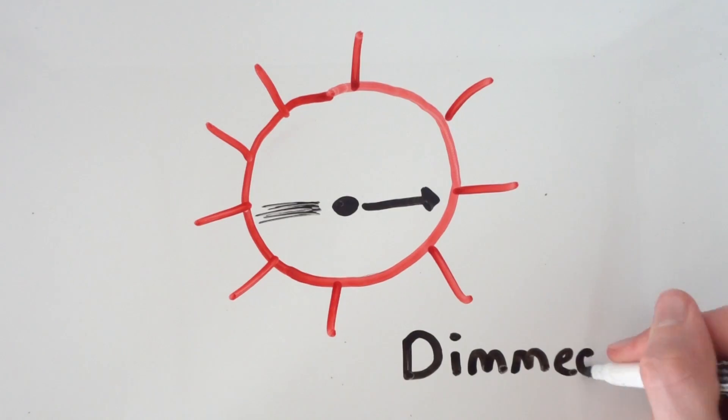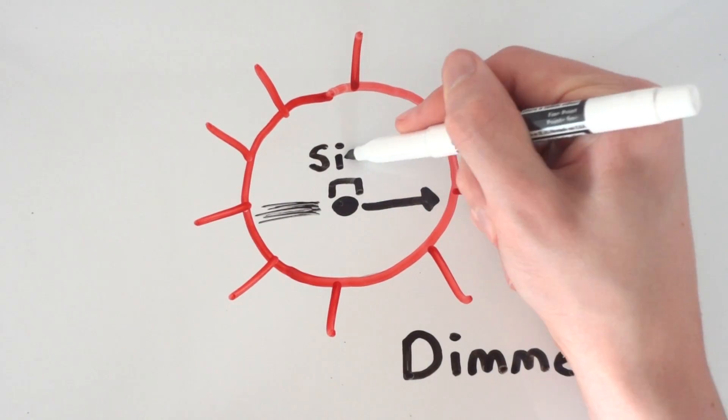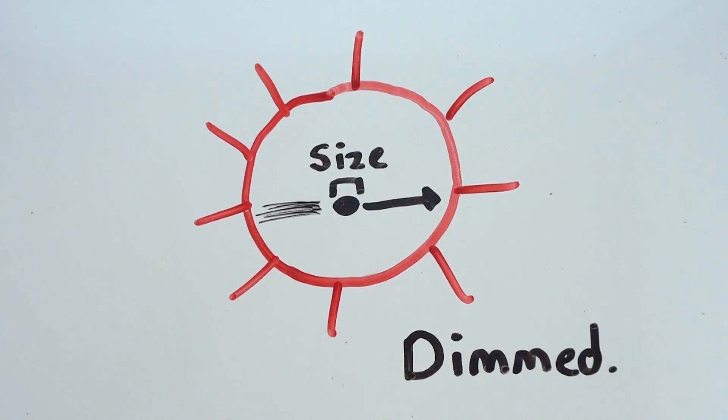By working out how much the star is being dimmed by a planet orbiting across it, you can work out the size of the planet and if it is a similar size to Earth or not.